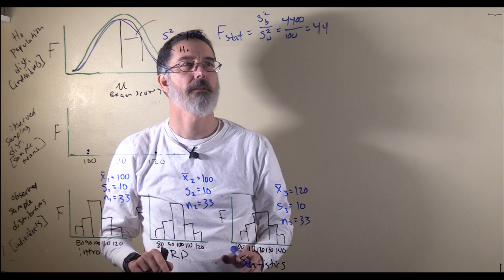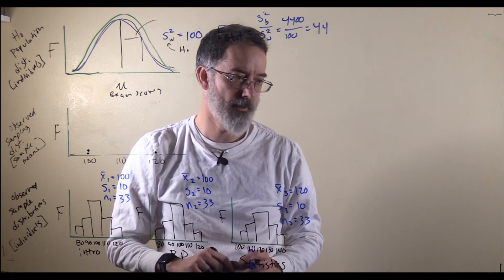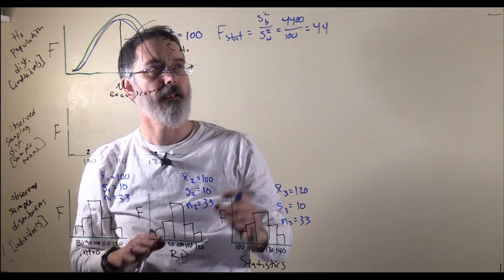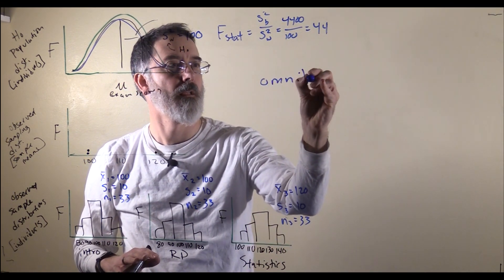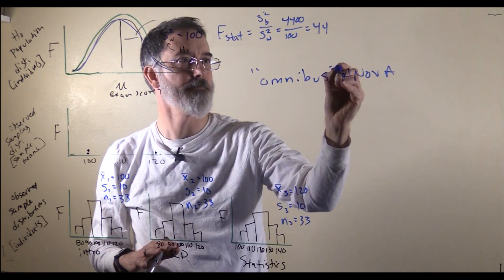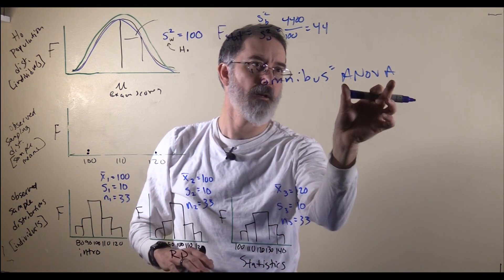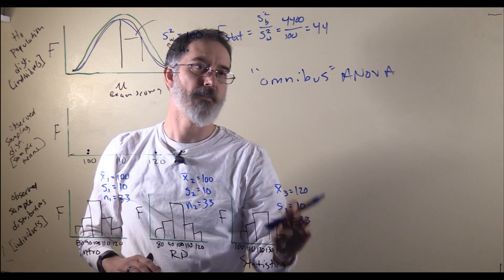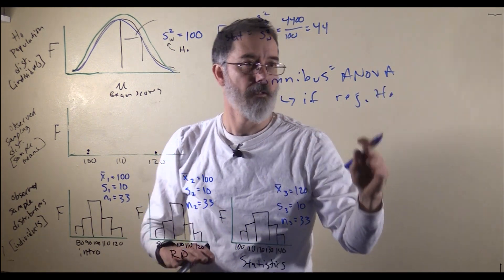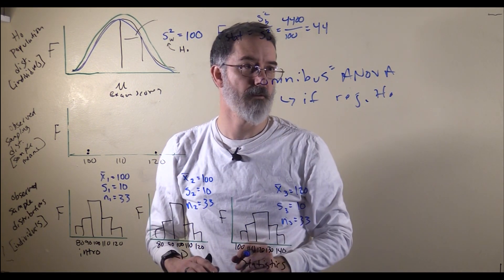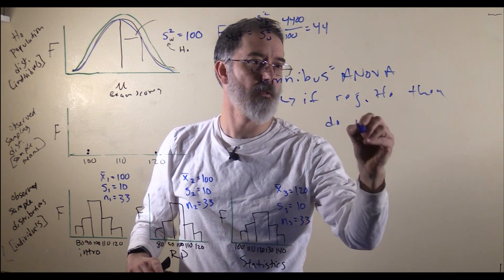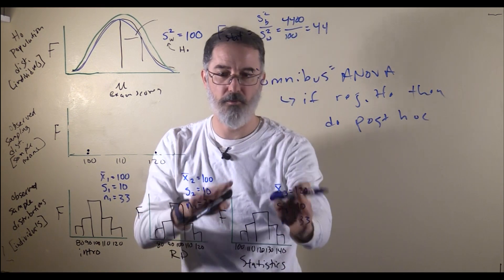When you are doing ANOVAs and you are comparing three or more means, the first thing that you will want to do is the regular ANOVA that we talked about in the previous video. That is called the omnibus ANOVA, because this one analysis of variance compares all three means at the same time. And only if you reject the null hypothesis, if your p-value is less than alpha, if your test statistic is more extreme than your critical value,